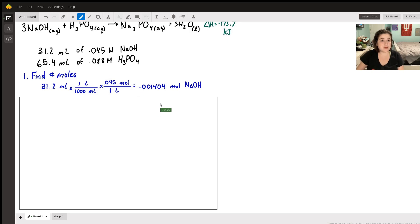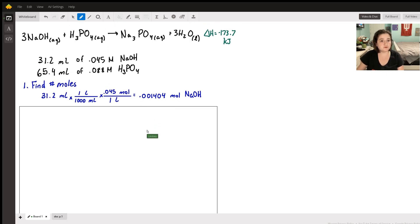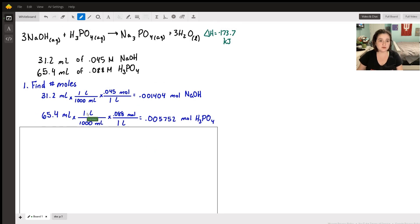For phosphoric acid, same thing: 65.4 milliliters, 1000 mils in one liter, 0.08 moles in one liter. That gives us this value for moles of phosphoric acid.